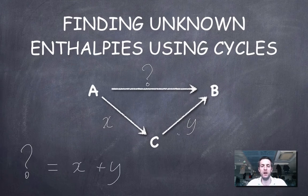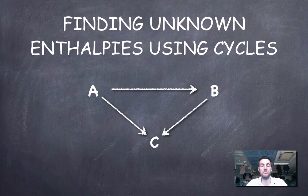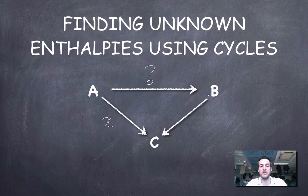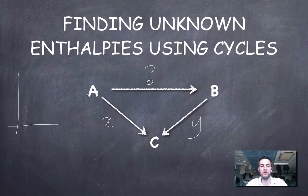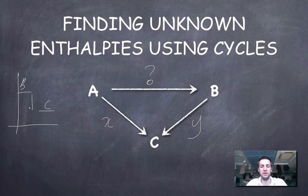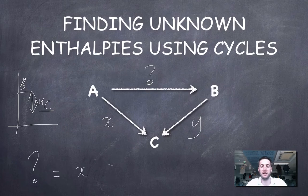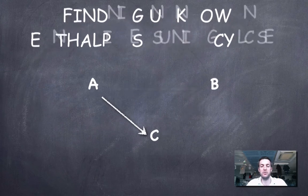As an SL student I don't have to construct these cycles too much, but as an HL student I do. If the unknown enthalpy change is A to B, and I know the enthalpy change from A to C and from B to C, I need to think carefully. Going from A to B involves going A to C first, then C to B. If the enthalpy change of B to C is exothermic, then going from C back to B involves the same magnitude but a different sign. So going from A to C then C to B involves going in reverse relative to Y, giving minus Y. The unknown enthalpy change equals X minus Y.